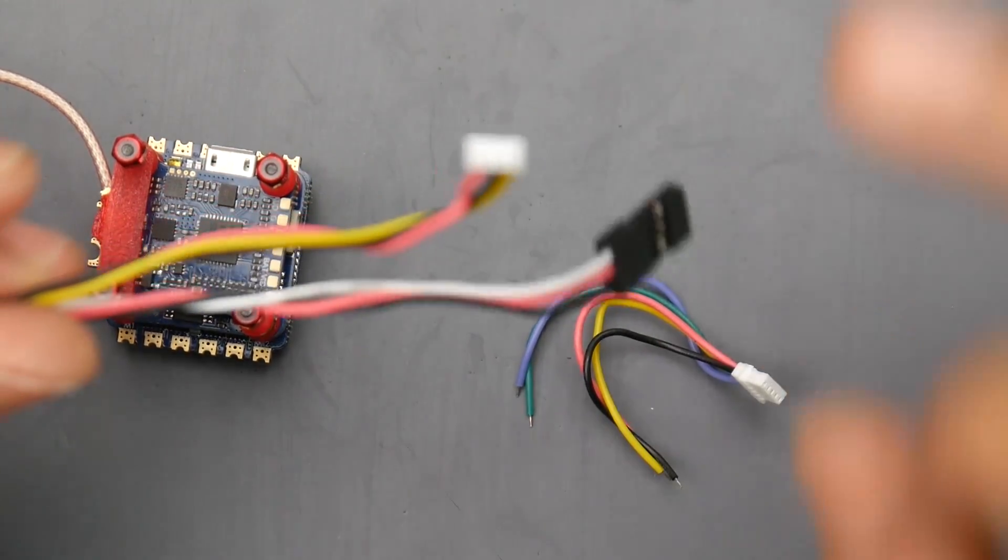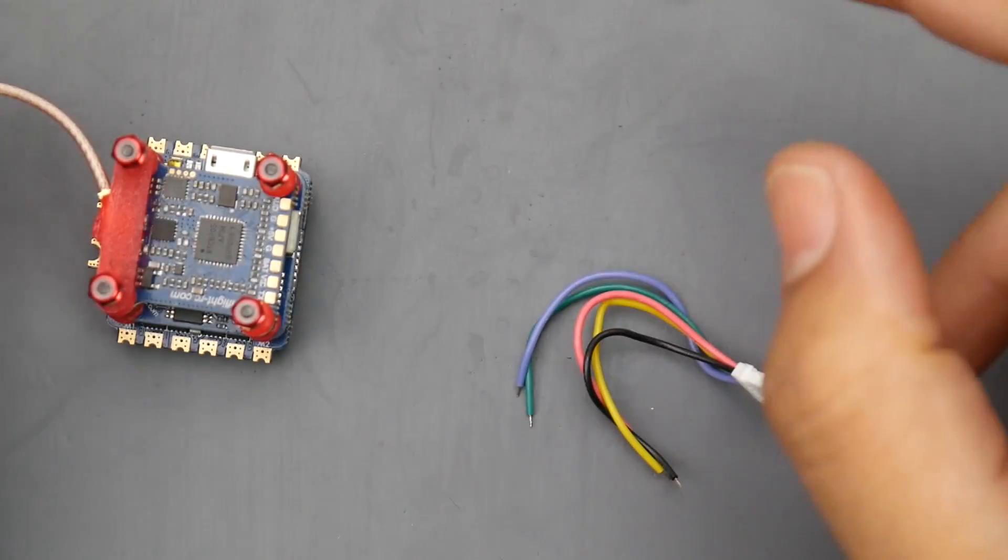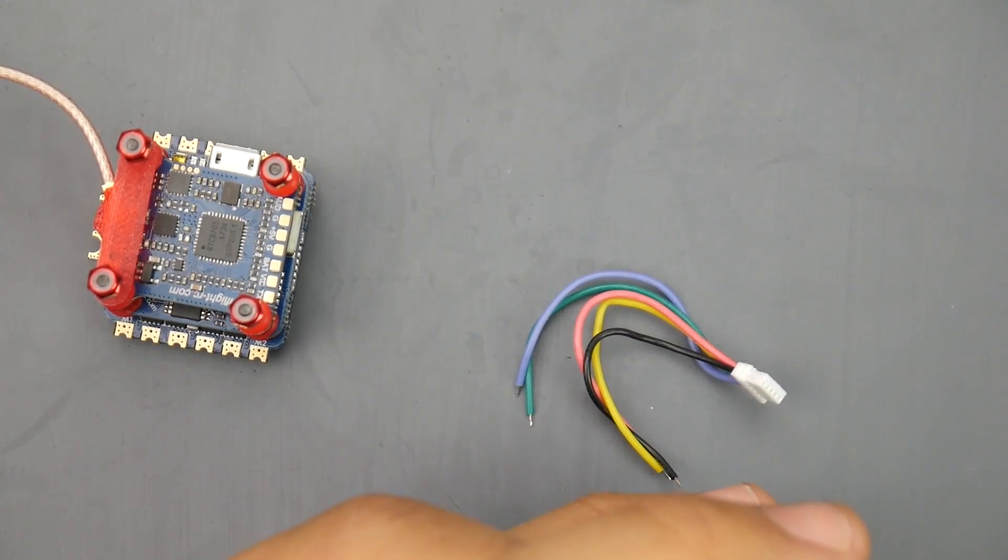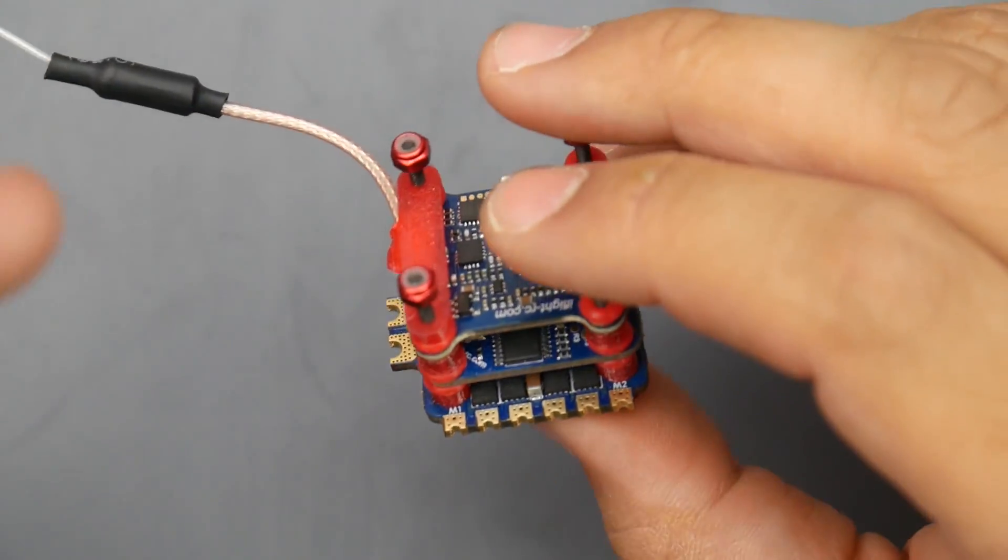So we're already basically done here. All you need to do basically is just the only soldering. I think you will need to do is possibly solder your receiver. You might have to cut this off, your motors, and your battery terminal. And I don't think there's anything else you're going to need to solder to this.